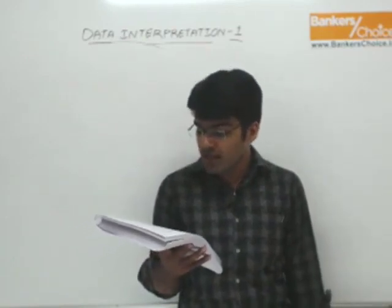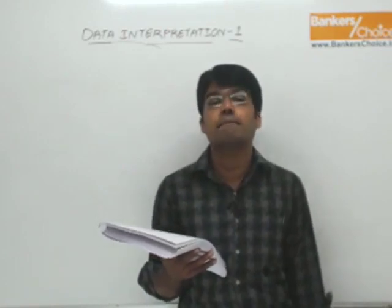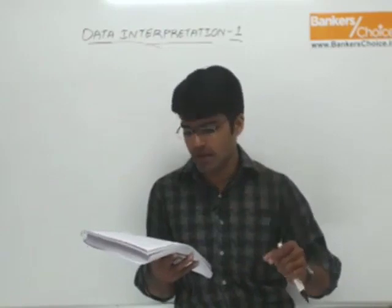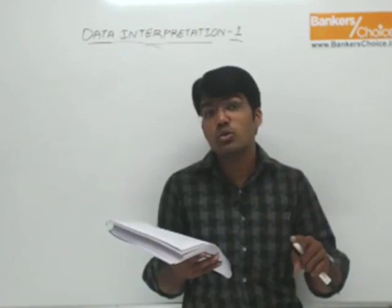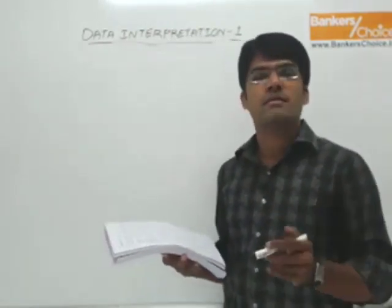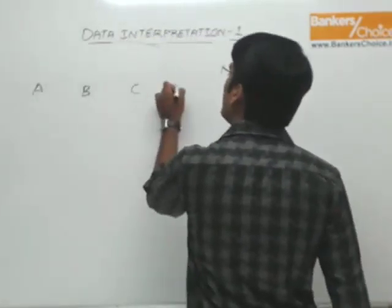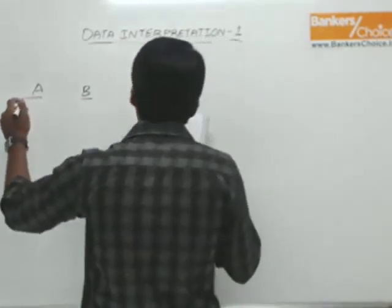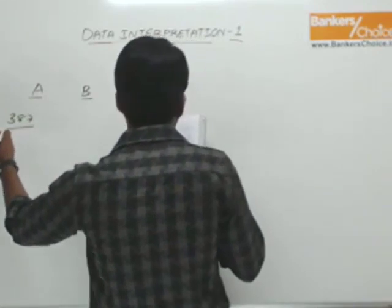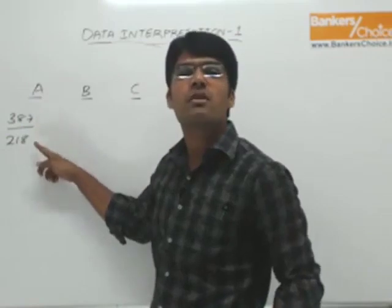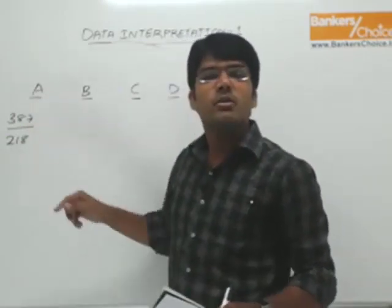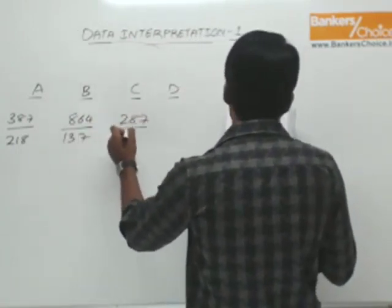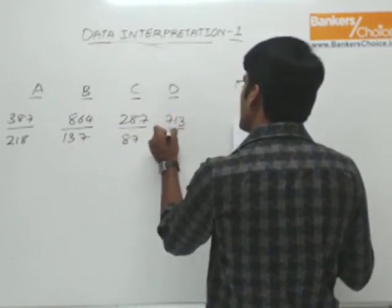Question number one: the maximum ratio of the number of novels issued to the number of members in a class. Ratio means a divided by b — novels by members. For each class: Class A is 387 by 280, Class B is 864 by 137, Class C is 283 novels among 87 members, and Class D is 713 novels among 96 members.